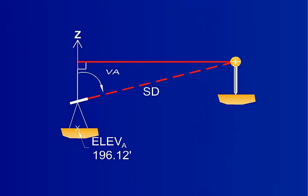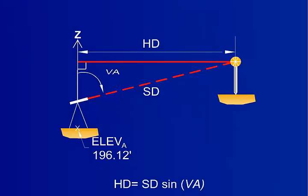The total station determines the vertical angle and the slope distance. From that information, we can determine the horizontal and vertical distance. The horizontal distance is the slope distance multiplied by the sine of the vertical angle. When determining the elevation, we need the vertical distance, so we can neglect the horizontal distance for now.